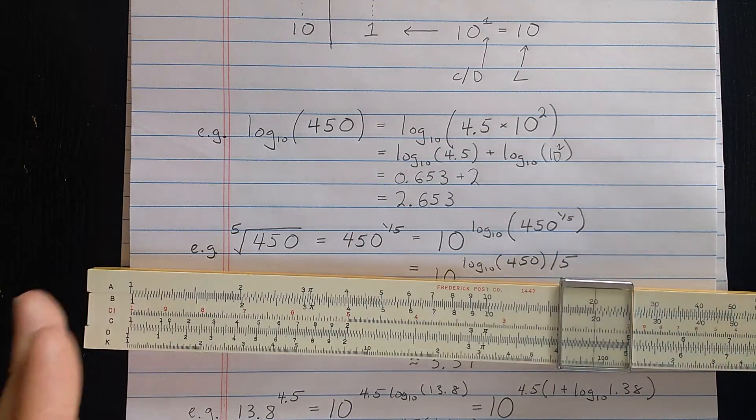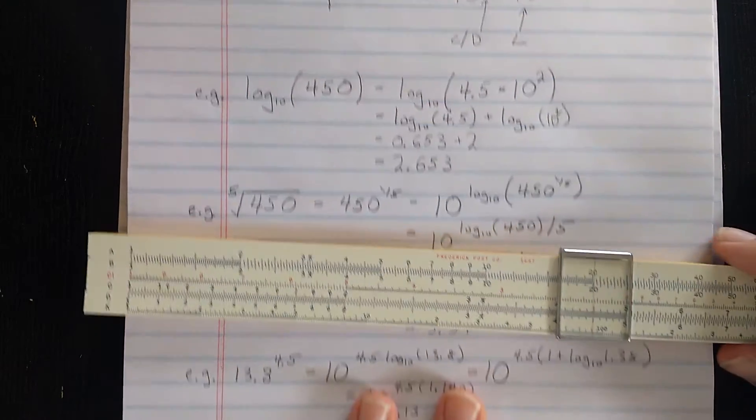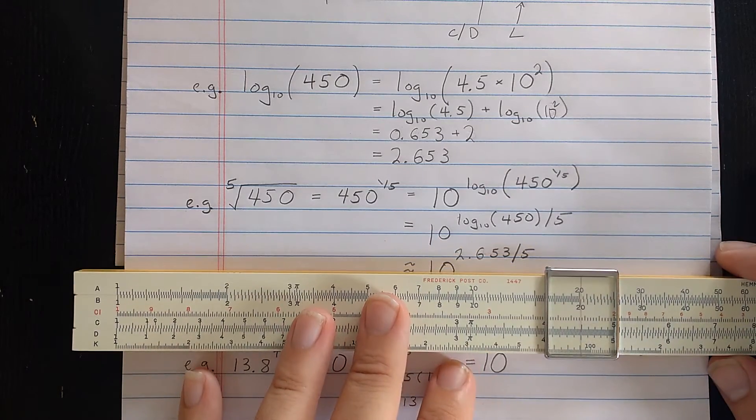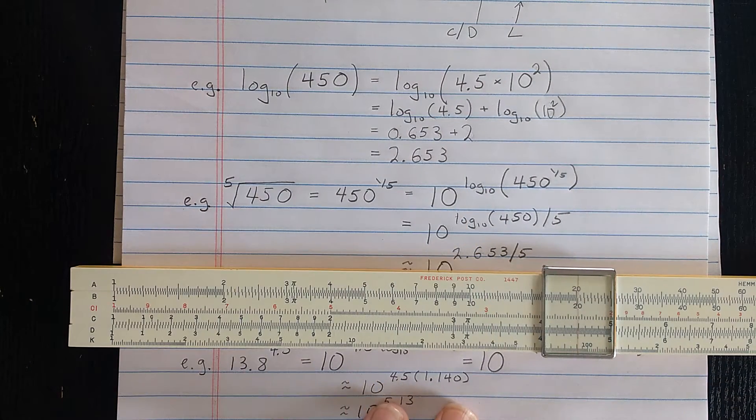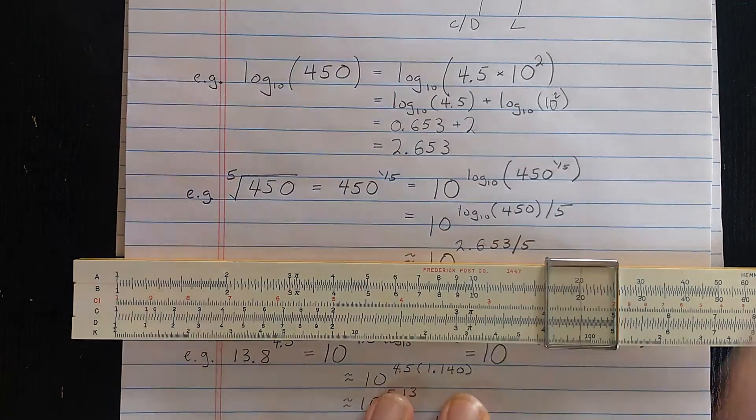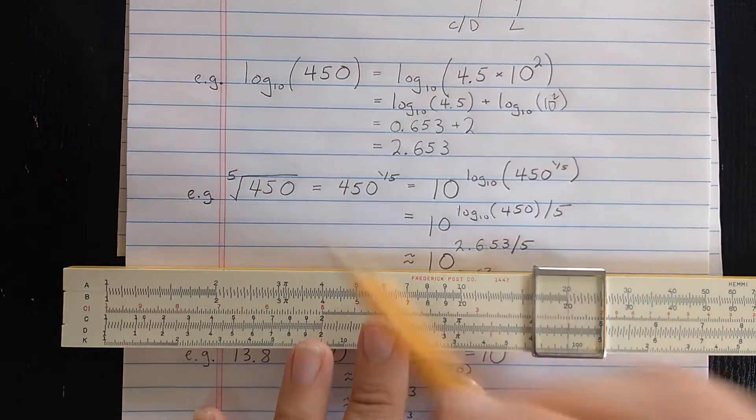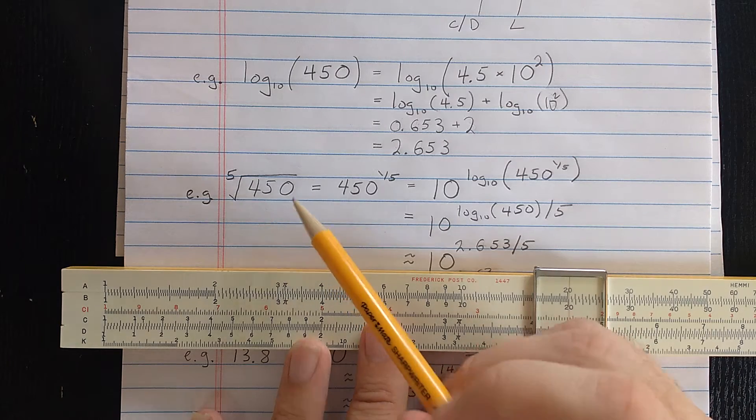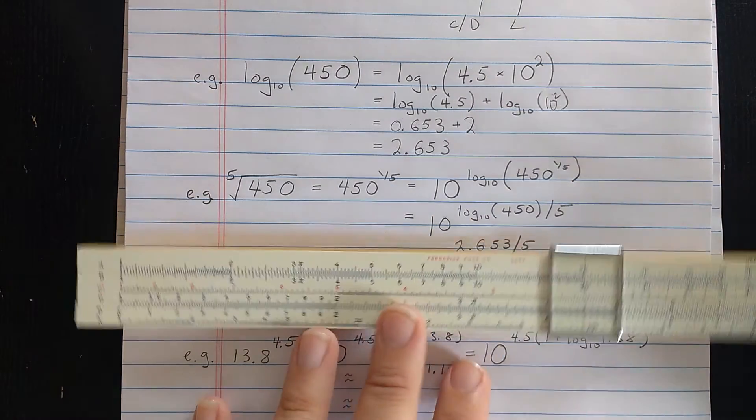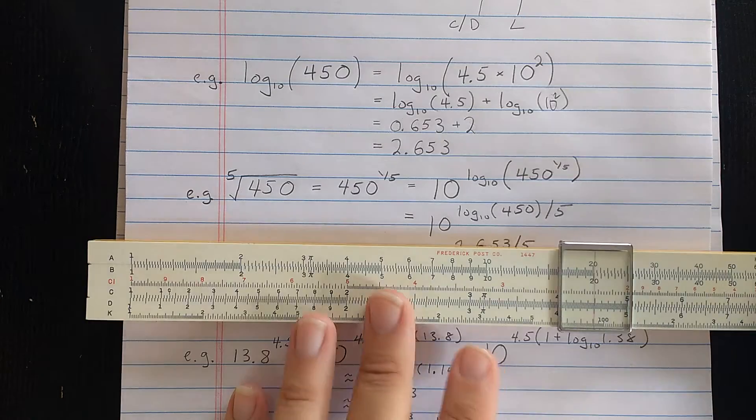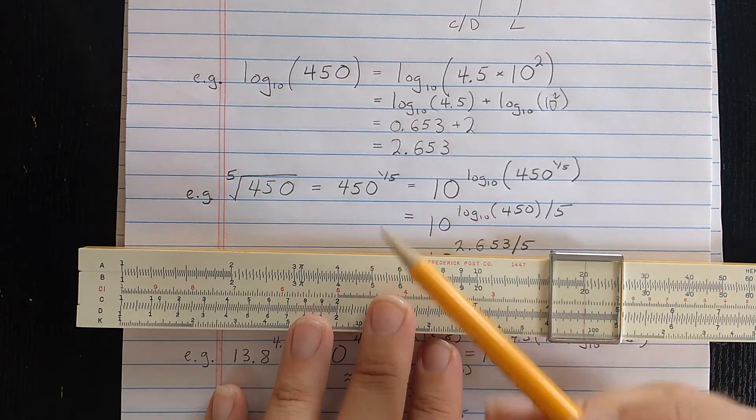Now there are some applications of logarithms by themselves. You know, decibel scale, certain things like that. So it is useful sometimes to just compute the logarithm. But let's see one of the original uses of the logarithm, which is to make simple a calculation like this, where I want the fifth root. And we know the fifth root is not something you can easily do on a basic slide rule like this.